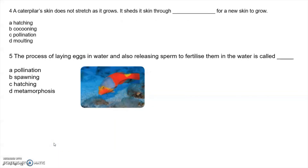Number four: a caterpillar's skin does not stretch as it grows — it sheds its skin for a new skin to grow. The answer is molting. Number five: the process of laying eggs in water and releasing sperm to fertilize them in water is called external fertilization.